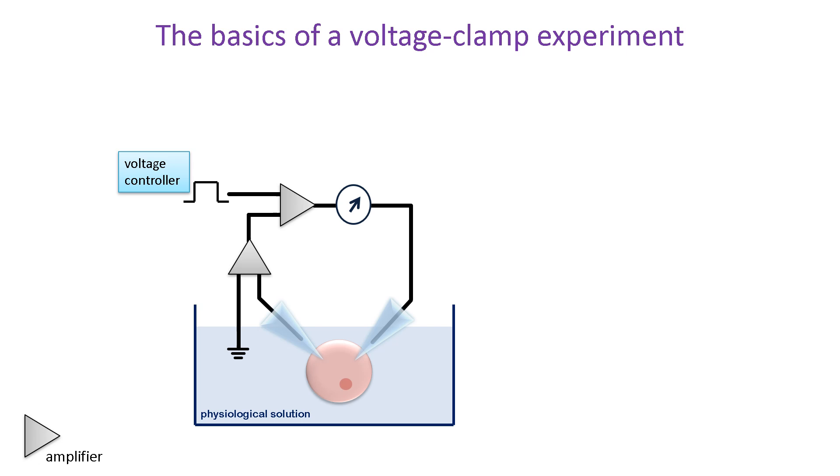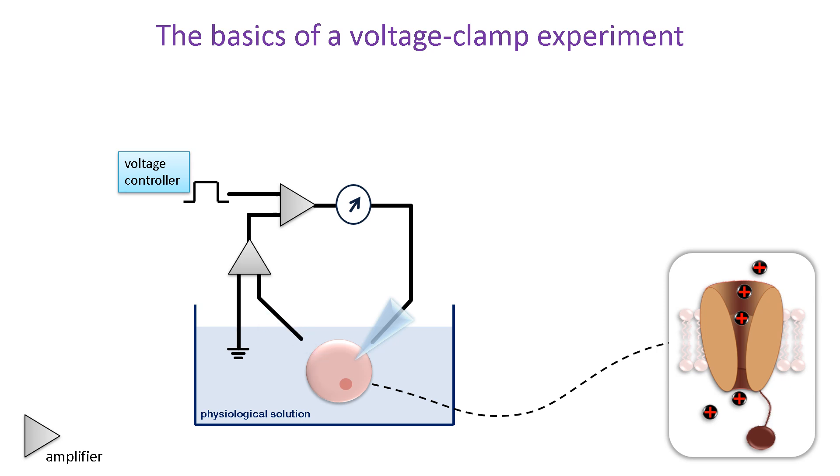Voltage clamp is an electrophysiological technique that is used to measure the ionic currents that flow across a cell's membrane under conditions that stop the membrane potential from changing in response to those currents. The basic principles are illustrated here for a two-electrode system. A cell bathed in physiological solution is impaled with a fine glass microelectrode containing an electrolyte and connected to an amplifier by silver wire. Another wire connects the amplifier to the physiological solution and it acts as the reference point against which changes in voltage or current across the cell membrane are measured.